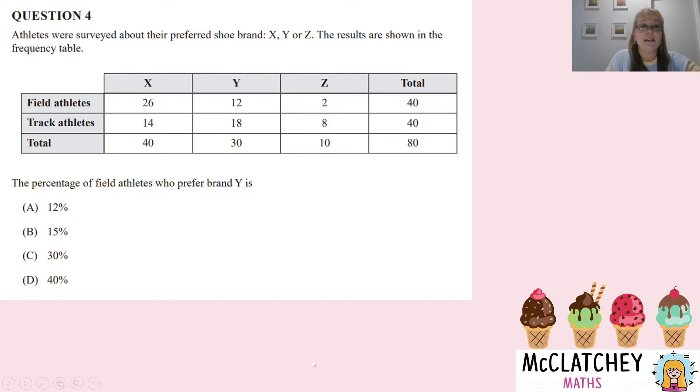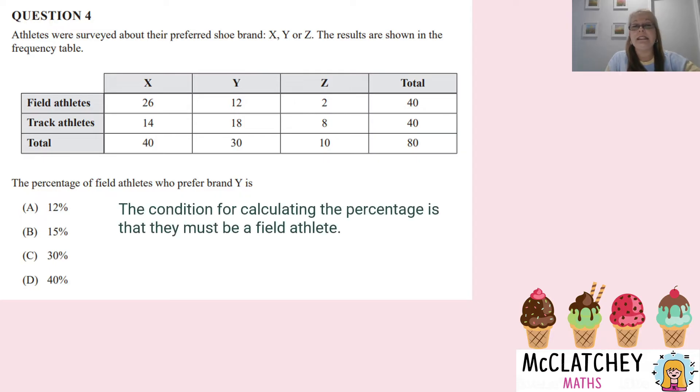Now the question asks us, the percentage of field athletes who preferred brand Y is? Now that means we're not interested in the track athletes at all. In fact, it's our condition that they must be a field athlete. So that means that we're going to have to do a percentage out of 40. So we're not actually doing it out of 80 at all.